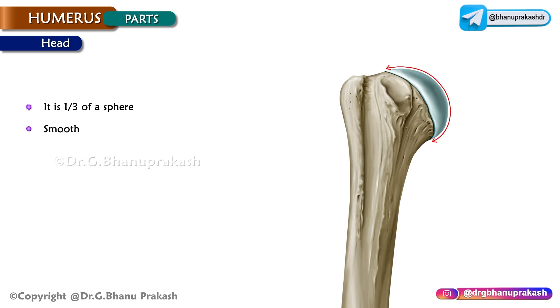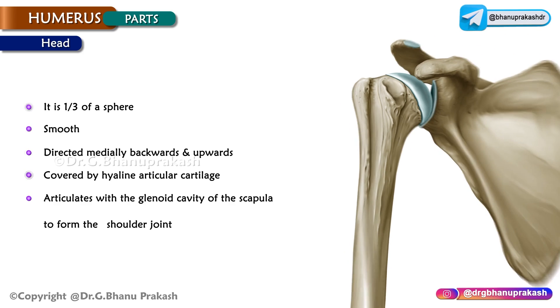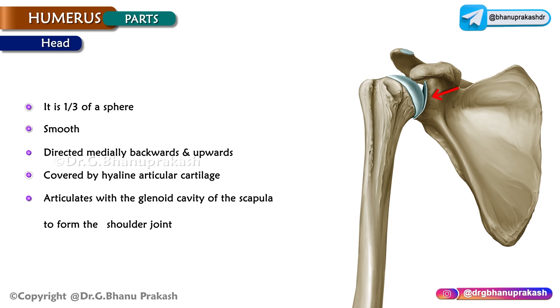The head is directed medially, backwards and upwards. It is covered by hyaline articular cartilage and articulates with the glenoid cavity of the scapula to form the shoulder joint.